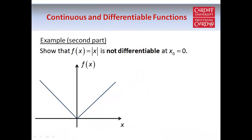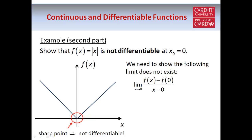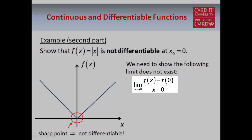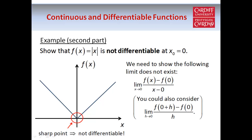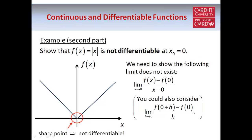Next we want to show the function is not differentiable at x0 equals zero. The function is differentiable at all non-zero values of x, but we're only going to look at what happens at the origin, where there is obviously a sharp point on the graph, so it's not smooth there, which means it's not going to be differentiable. To prove this we have to show that this limit does not exist: the limit as x approaches zero of f of x minus f of zero over x minus zero. You might prefer to use the equivalent formula — the limit as h approaches zero of f of zero plus h minus f of zero over h — the two definitions are completely equivalent.